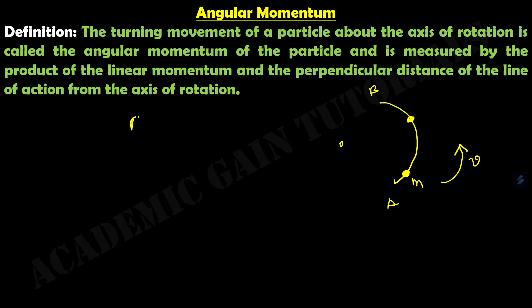Linear momentum P equals M times V, as discussed in the previous chapter. When the particle is at position N, its position vector from the center is R. According to the definition of angular momentum, the angular momentum L is the turning movement about the axis of rotation, and is measured by the product of linear momentum and perpendicular distance of the line of action.